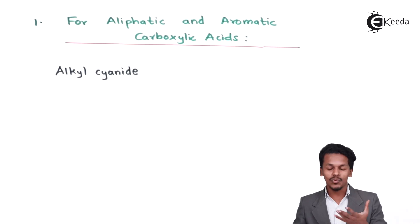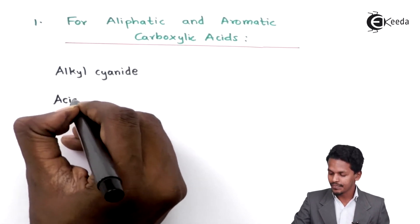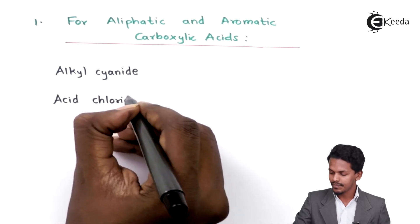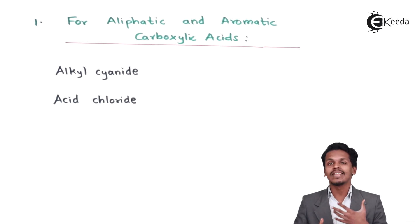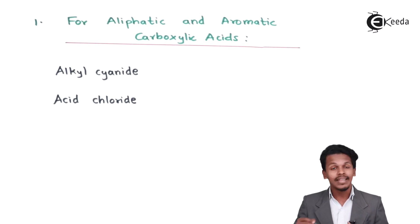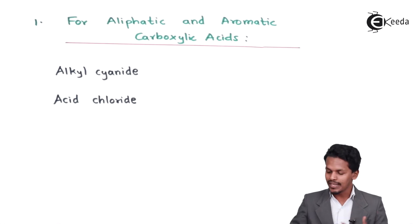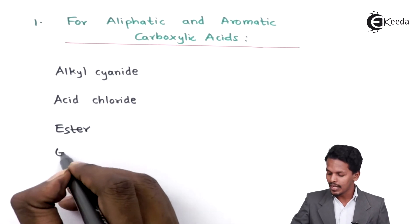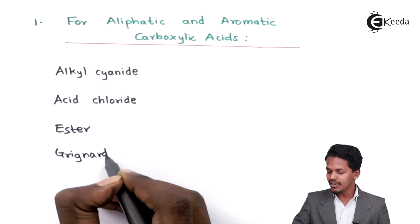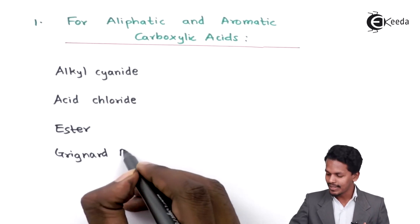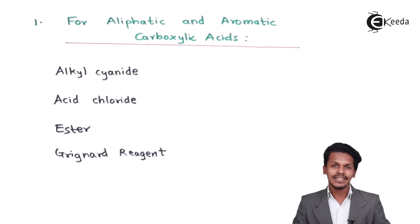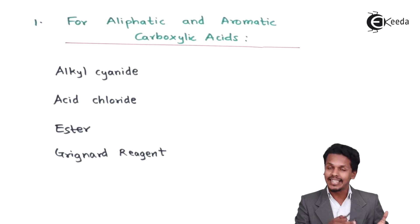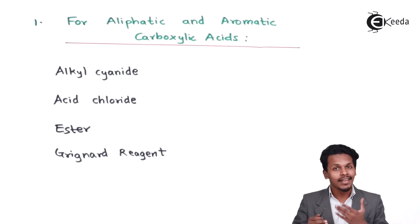The next method uses acid chloride. We can easily prepare aromatic as well as aliphatic carboxylic acid from acid chloride by carrying out the hydrolysis process. From ester we can also easily prepare carboxylic acid. Another method is by using Grignard reagent — in the presence of carbon dioxide, we can easily prepare carboxylic acid, which could be aromatic or aliphatic depending on the reactant used.